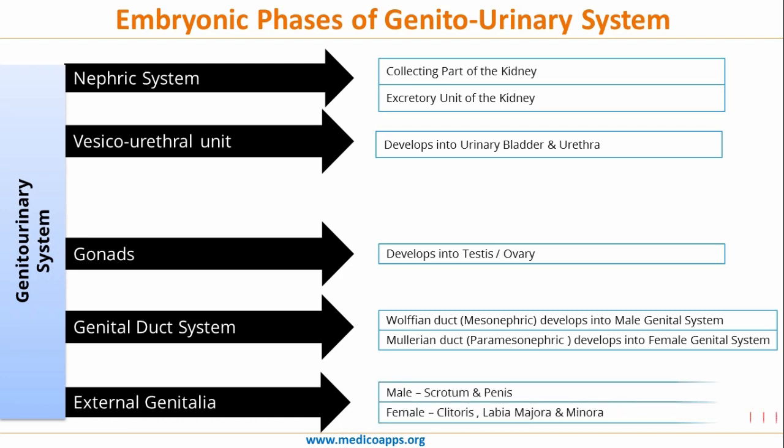Further, the reproductive part consists of the male external genitalia — the scrotum and the penis — while the female external genitalia consists of the clitoris, labia majora, and labia minora.